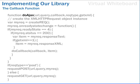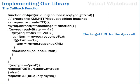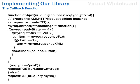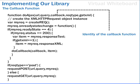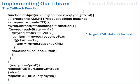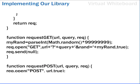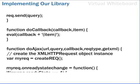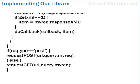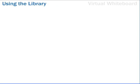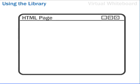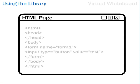Our function doAJAX now takes five arguments. This listing shows the complete JavaScript source code. To demonstrate the use of the library, we're going to start with another simple HTML page, the code for which is shown here.